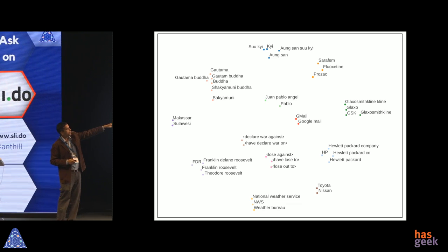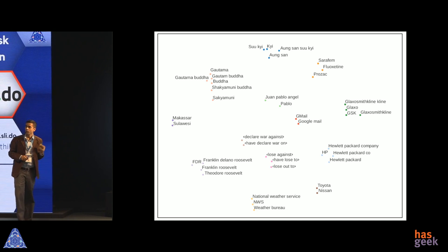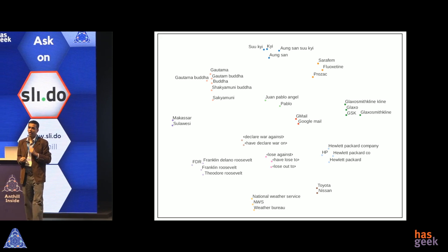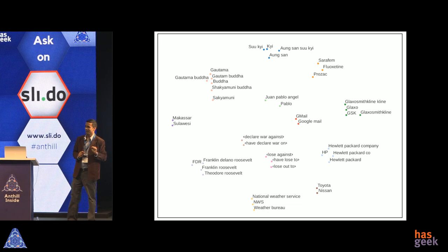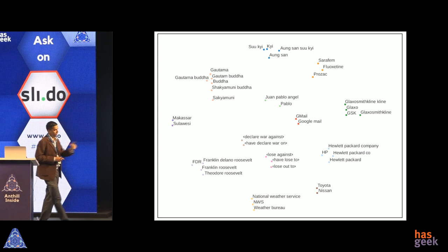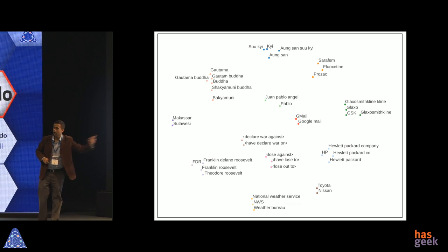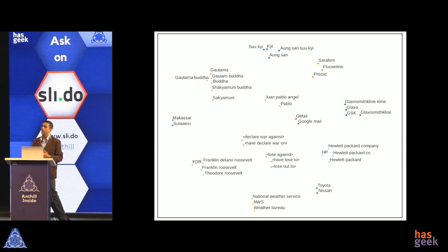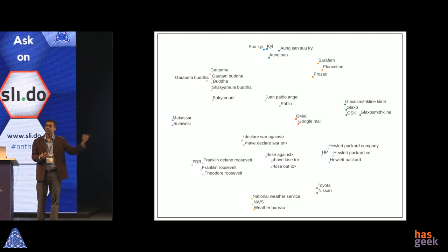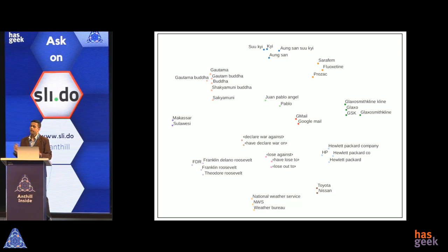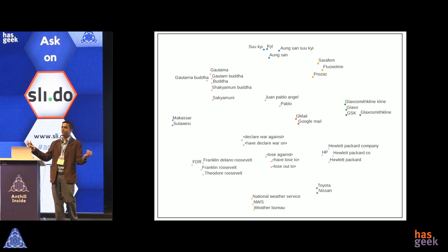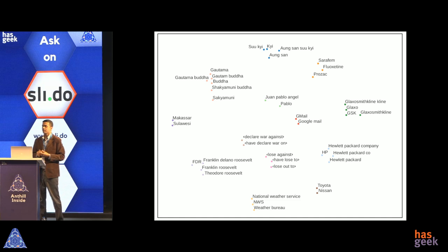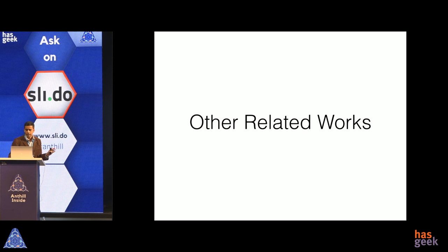We also have relation phrase embeddings. One interesting thing we discovered is that Sakyamuni is another name for Buddha — so CESI is already teaching you something new. We do have errors — Toyota and Nissan were proposed as canonicalized versions of each other, which isn't correct, likely due to sparsity in the graph. Canonicalization is a very important problem that shows up whenever data is generated from different sources with no prior agreement on terminology, and CESI-style models can be applied there.